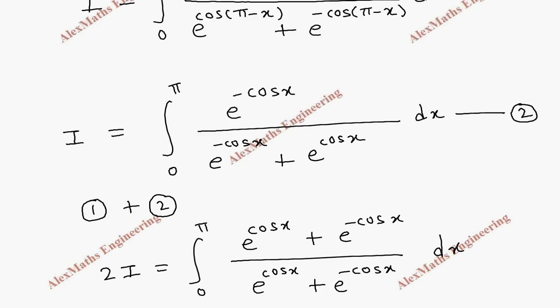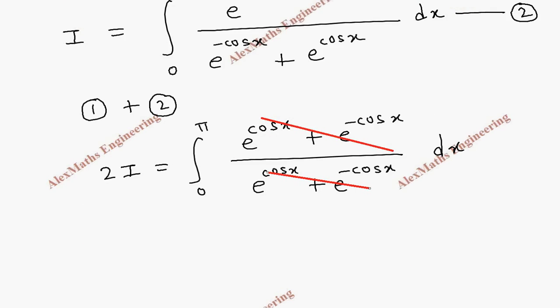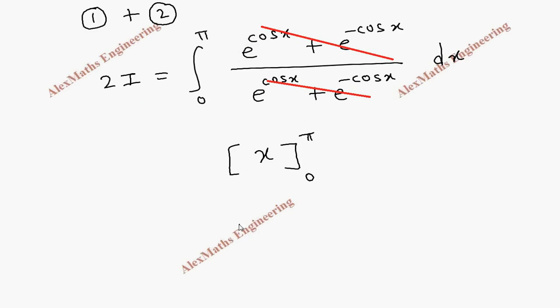So totally all the terms get cancelled and we are left with only dx. Its integration is x and we have to put the limit 0 to pi. Upper limit minus lower limit we have to substitute, and this is our 2I.